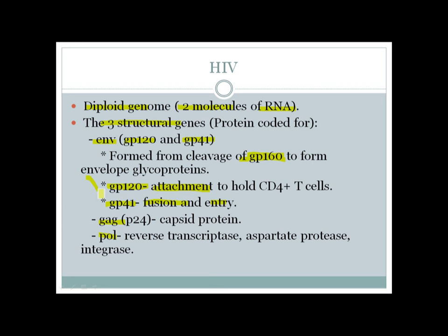So gp120 and gp41 help in the first and second steps of infection of CD4-positive T cells by HIV. The gag gene codes for p24, the capsid protein. The pol gene codes for multiple enzymes: reverse transcriptase, aspartyl protease, and integrase.